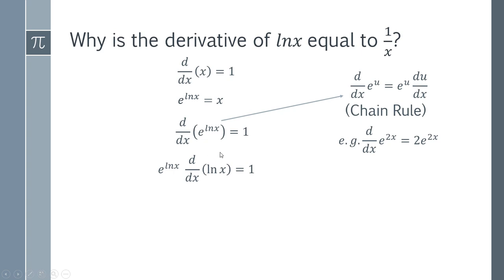Now we should notice that this e to the ln(x) should be familiar. We've seen this earlier. And we've seen that e to the ln(x) is just x. So we can replace this with x. So we get x times the derivative that we want to find equals 1.